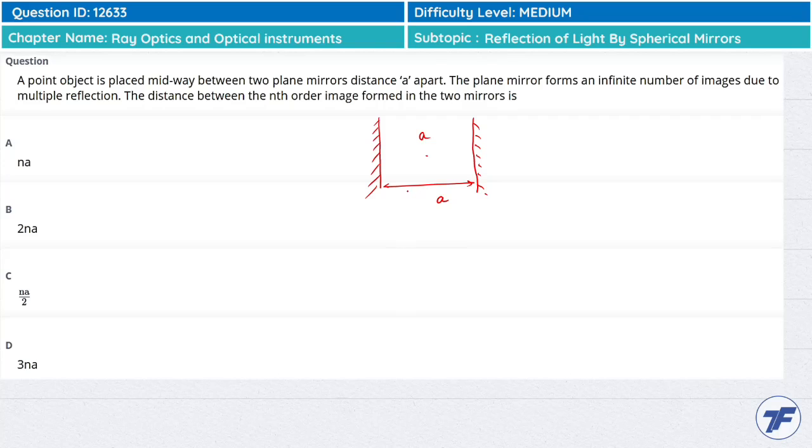Here is a/2 distance and here is a/2 distance. This mirror is M1, this mirror is M2. Mirror M1's first image will be IM1, and mirror M2's first image will be IM2.